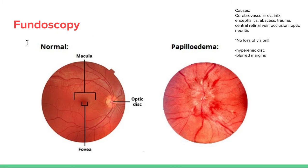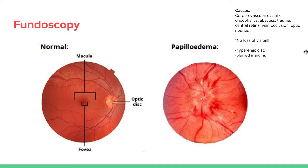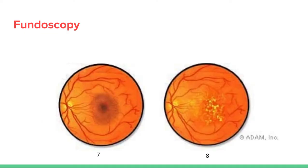This one is normal — just included to trick you — but I wanted to show normal and then show you papilledema. Papilledema shows hyperemic discs and blurred margins, a sign of increased intracranial pressure. If someone comes in with a headache, look at their optic discs to rule out secondary causes like a tumor or hemorrhage before considering primary causes like migraines or tension headaches. There are many causes of papilledema, but importantly there is no loss of vision.